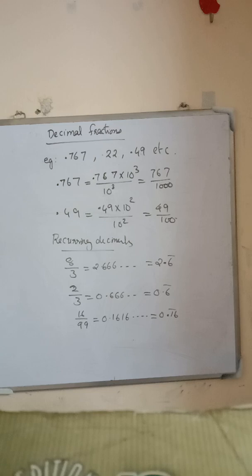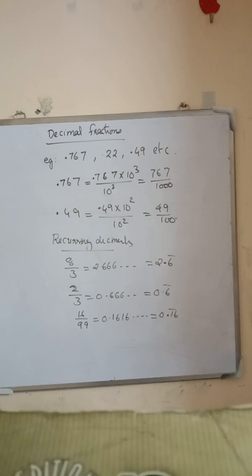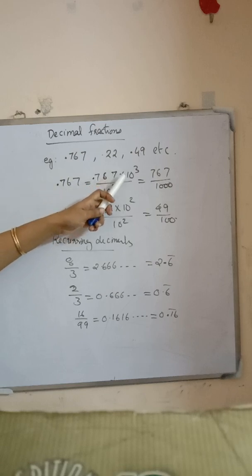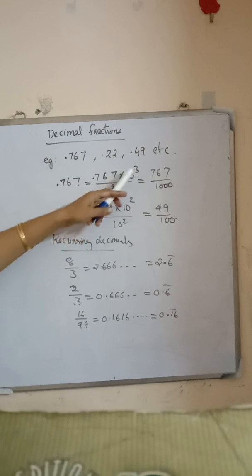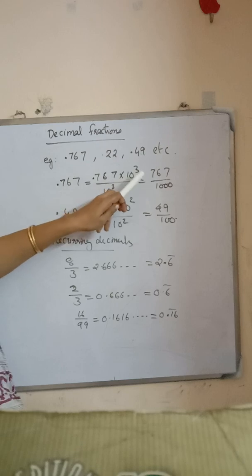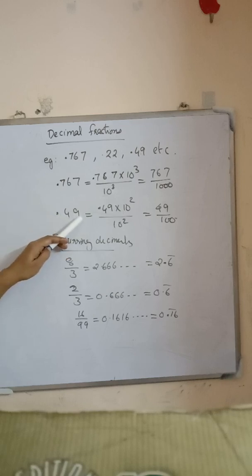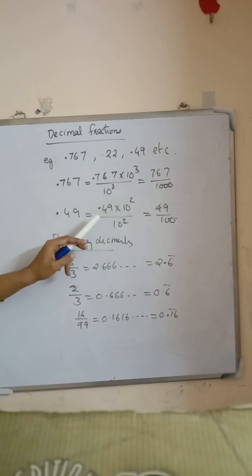Decimal fractions: a set of digits after a decimal point is called a decimal fraction. Examples are 0.67, 0.22, 0.49, etc. They can be converted into proper fractions by multiplying and dividing by 10 raised to n, where n is the number of digits after the decimal point. For example, 0.767 has 3 decimal digits, so it equals 767 divided by 1000. Similarly, 0.49 has 2 decimal digits, so it equals 49 by 100.